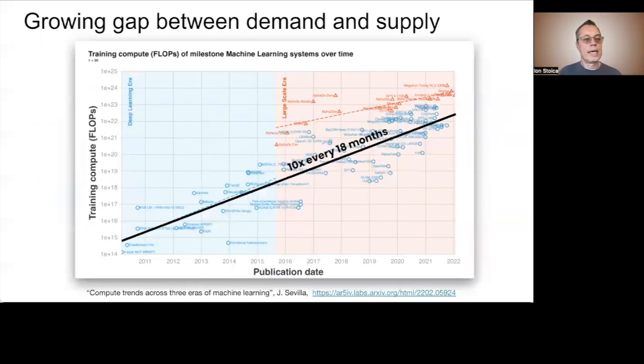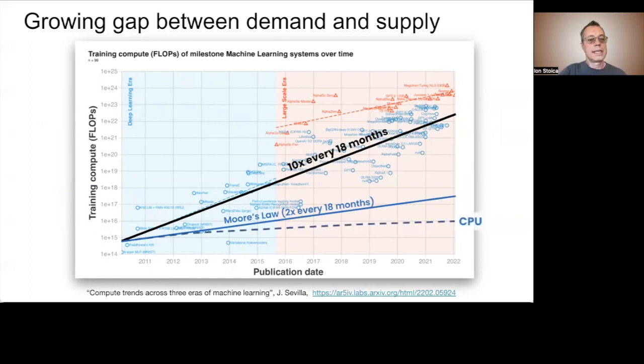To put things together, here I am overlaying the Moore's Law performance increase, as well as the real per-core performance increase on the previous plot. The gap between the compute demand of training the state-of-the-art models and the performance of a single core is huge and is growing rapidly. In fact, note that even if the Moore's Law weren't ending, it would have been of little help to bridge this gap.